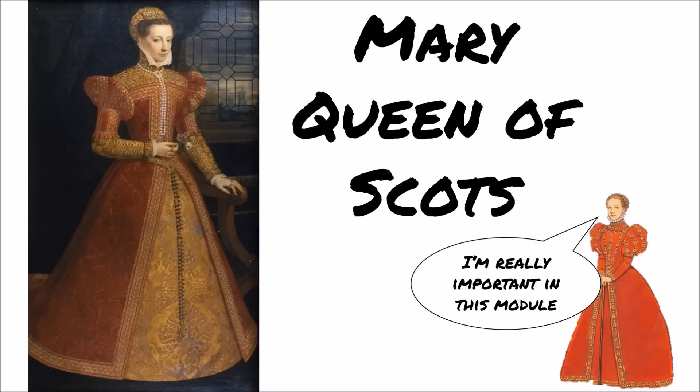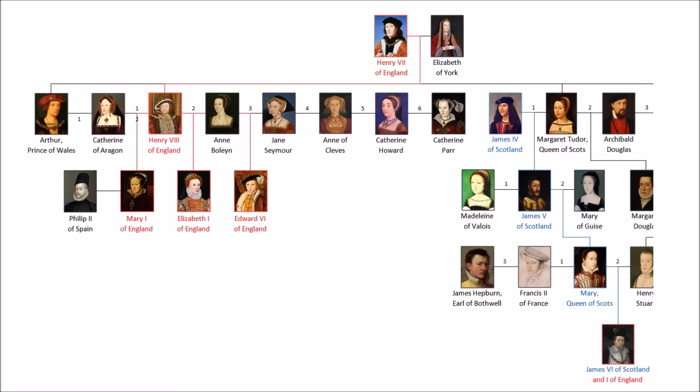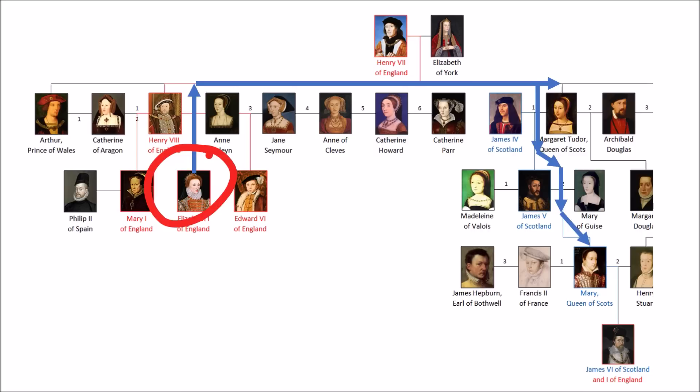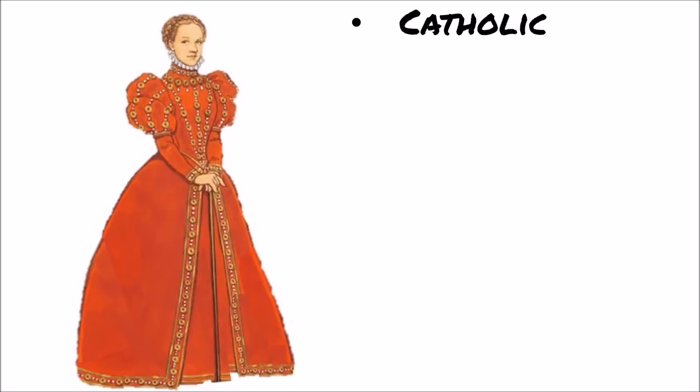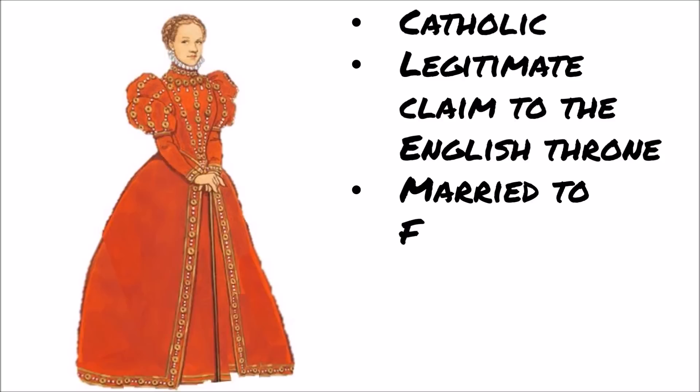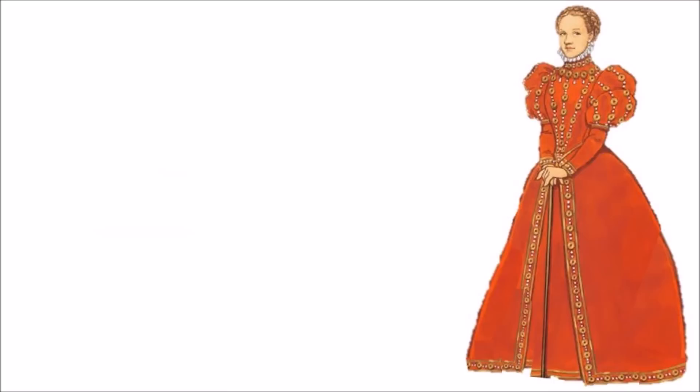Today we need to deal with Mary Queen of Scots. She's a key figure in Elizabeth's reign because she's Elizabeth's cousin. Looking at the House of Tudor, she is the granddaughter of Henry's sister. Margaret Tudor, who is the sister of Henry VIII, had a son James V of Scotland, who then had one daughter, Mary Queen of Scots. She was Catholic and had a legitimate claim to the English throne. Mary inherited the Scottish crown when she was only six days old and was married to the French King Francis II. While Mary was in France, her mother Mary of Guise ruled Scotland in her stead.